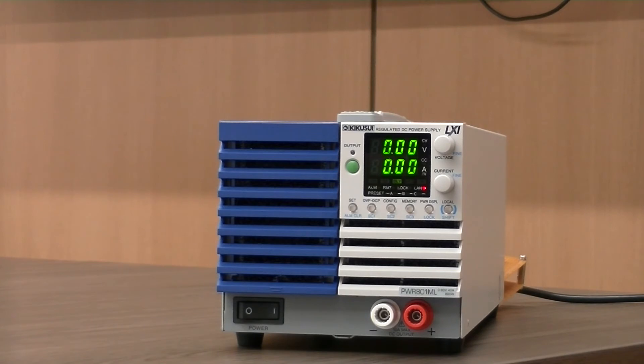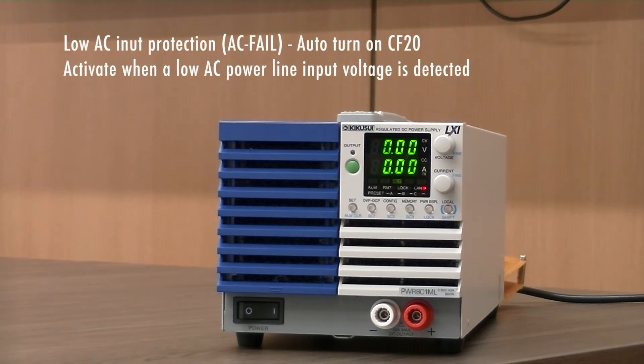The PWR01 can also sense when the AC input voltage is too low, causing the AC failed protection to activate and turn output off. You can set the PWR01 to automatically turn output on when the problem that caused the AC failed to be activated is corrected via config 20.